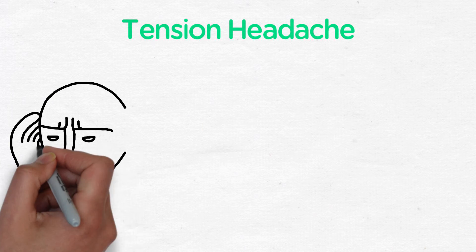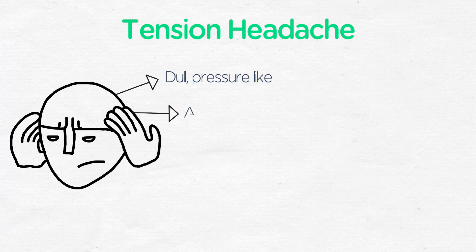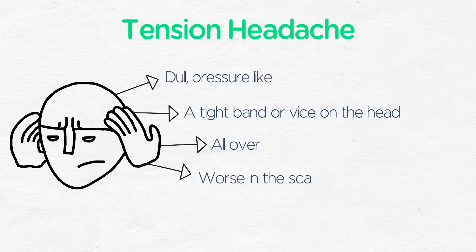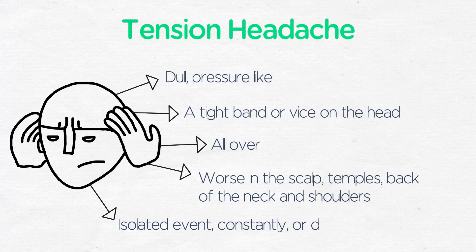Tension headache features are a dull, pressure-like, not throbbing sensation — a tight band or vice-like pressure on the head. It's all over, not just in one point or side of the head. It is worse in the scalp, temples, back of the neck, and possibly even down into the shoulders. The pain may occur as an isolated event, constantly, or even daily.